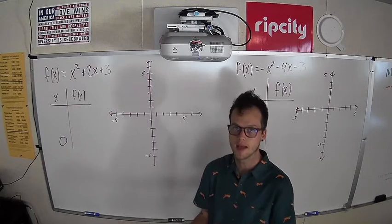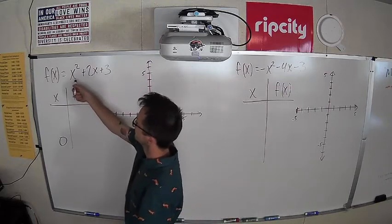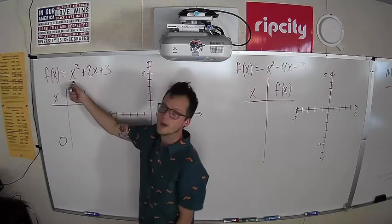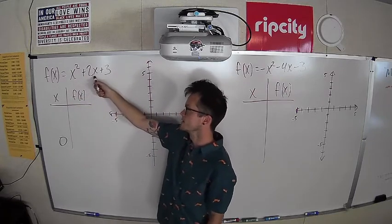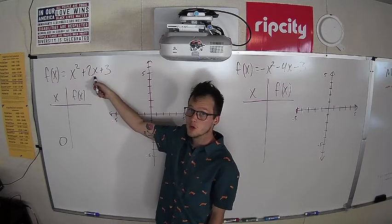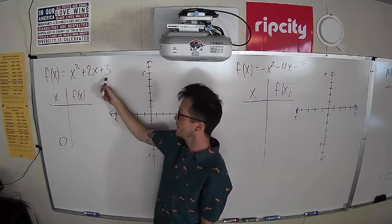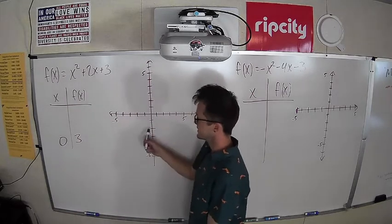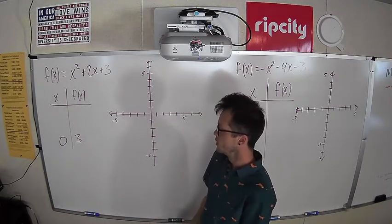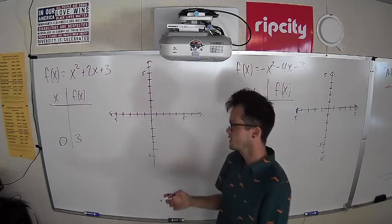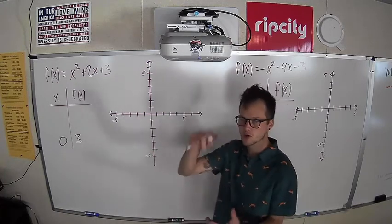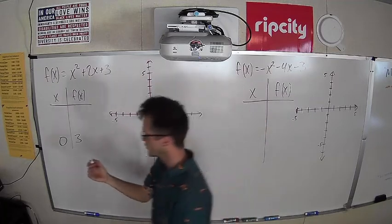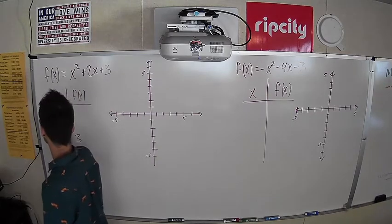If I plug in 0 for x — both of these x's — we know that 0 squared is just 0, and 2 times 0 is 0. So the f(x) value, or the y value, is just going to be 3. So this function has a point at (0, 3). We don't know if that's going to show us our turnaround point, so let's go above and below 0 — positive 1 and negative 1— and see what happens.